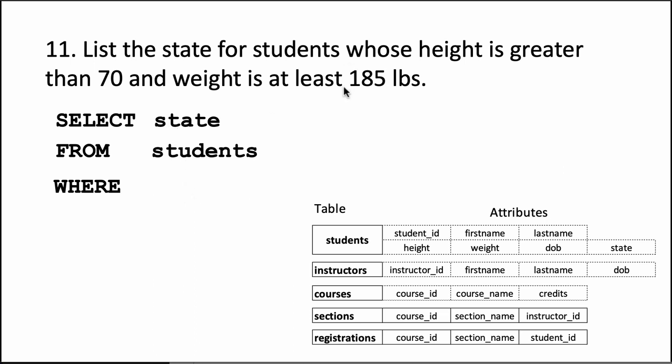And of course, since it says 'and', we need to have an AND in the where clause. And then it says weight is at least 185. Okay, so there is a subtle difference between height being greater than 70, which means strictly greater than 70, but weight is at least 185, which means weight is greater than or equal to 185. Okay, so you'll write the condition like this.